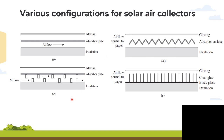Configuration C is the flat plate collector with obstacles — it is similar to B but with vertical obstacle elements between the absorber plate and insulation. These vertical obstacles create turbulence in the air flow, which enhances heat transfer. Basically, this turbulence increases the effective surface area for heat transfer, improving efficiency, but also increasing resistance to air flow.